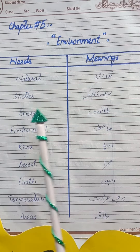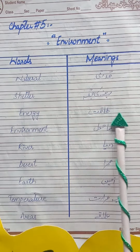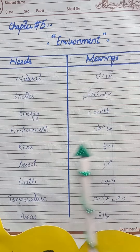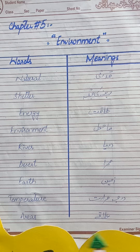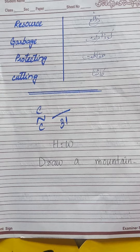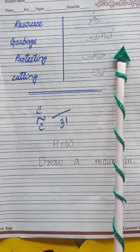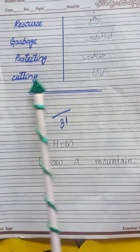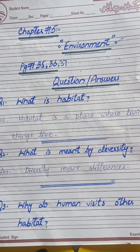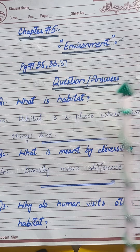Unit Number Five — Words Meaning. Number one: natural — meaning kudrati; habitat — rehne ki jaga; energy — taqat; environment — mahol; river — darya; desert — sehra; earth — zameen; temperature — darja hararat; areas — ilake; resource — zarai; garbage — kura kirkit; protecting — hafazat; cutting — katna.